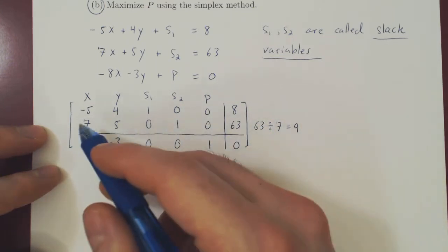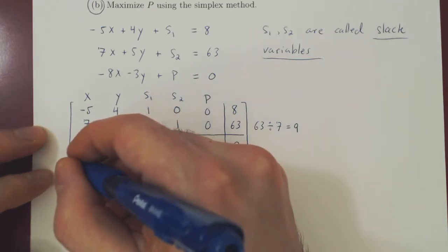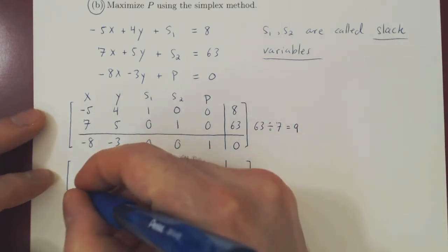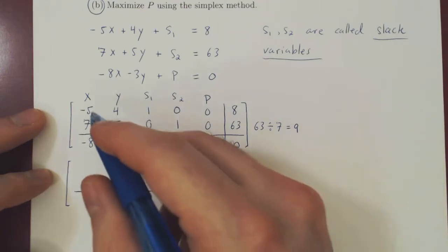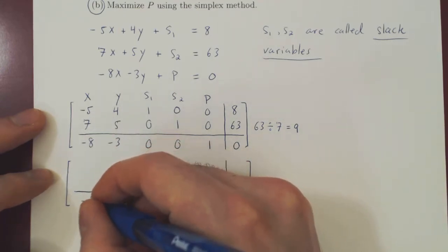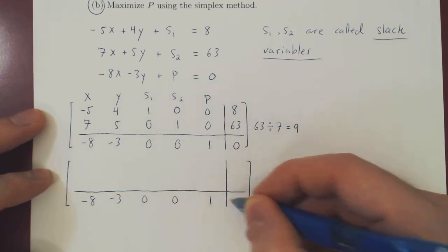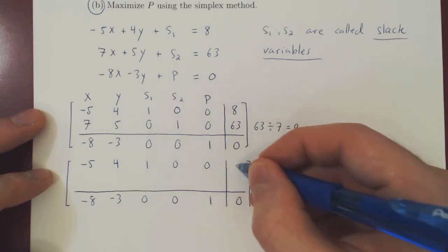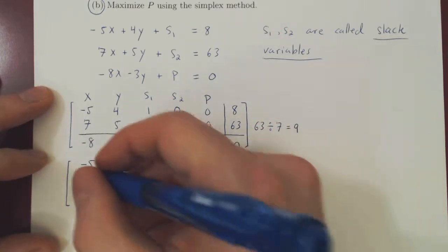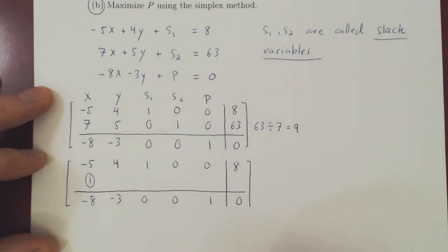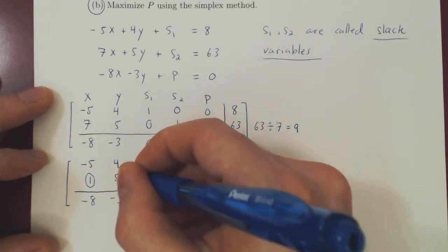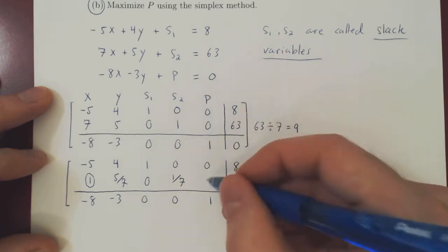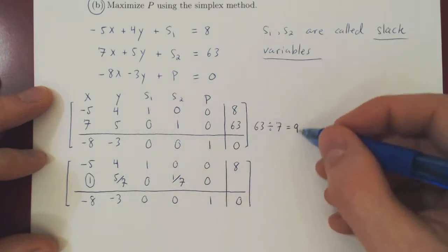So multiply row 2 by 1 over 7 to create our first pivoting 1. So we can recopy row 1 and row 3, as we're not changing them. Times 1 over 7, so we get 1, and we'll circle this 1 as it is our first pivoting 1. 5 over 7, 0, 1 over 7, 0, 63 over 7 is 9.